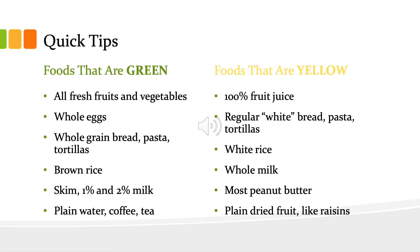Here are some quick tips. Foods that are green are all fresh fruits and vegetables, whole eggs, whole grain bread, pasta and tortillas, brown rice, skim, 1%, and 2% milk, plain water, coffee, and tea.